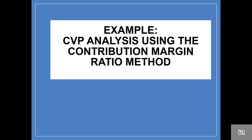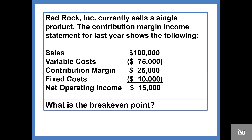Howdy! In this example we're going to take another look at CVP analysis, but we're going to use the contribution margin ratio method. RedRock Inc. currently sells a single product. The contribution margin income statement for last year shows the following.